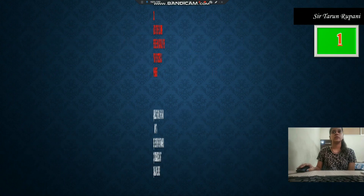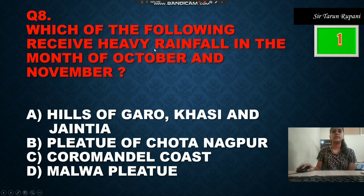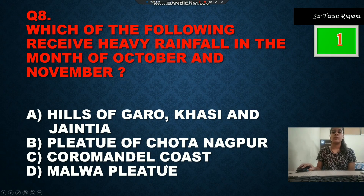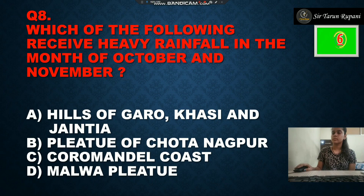Which of the following sees heavy rainfall in the months of October and November? Option A is hills of Garo, Khasi and Jaintia, option B is plateau of Chotanagpur, option C is Coromandel Coast, option D is Konkan Coast. The time is up and the correct answer is Coromandel Coast.